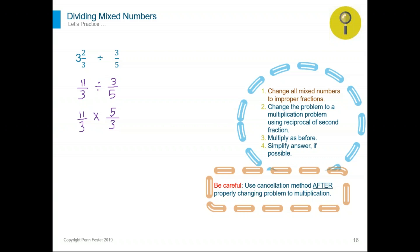Use the cancellation method: 11 and three — nothing common; five and three — nothing. So multiply across: 11 times five is 55 and three times three is nine. This is your final answer. Or if you'd like it in mixed number form, it will be six and one ninth.